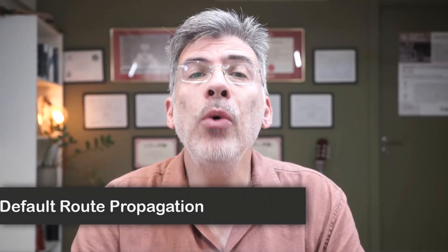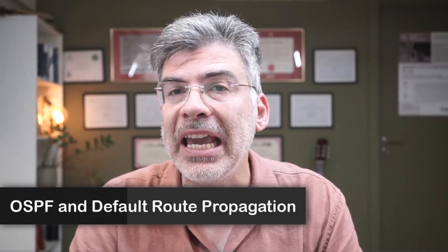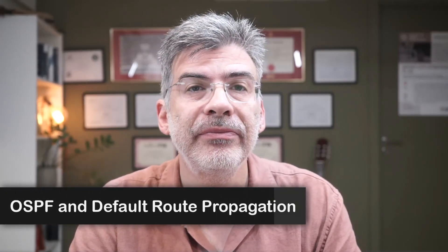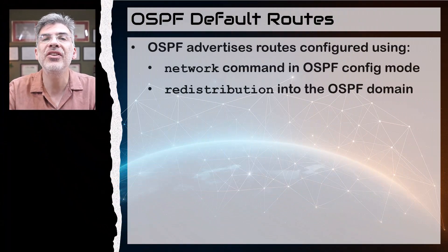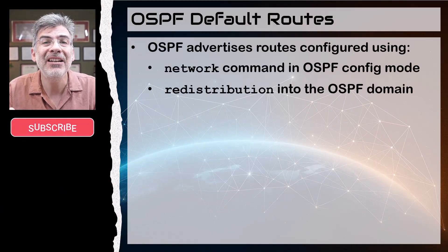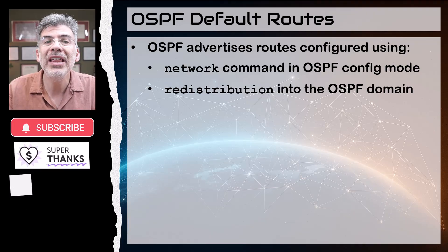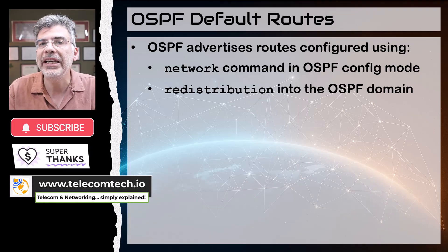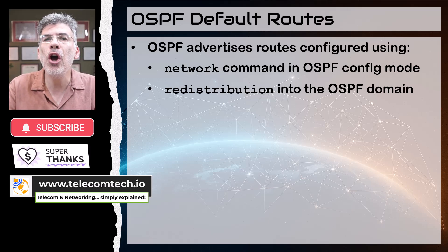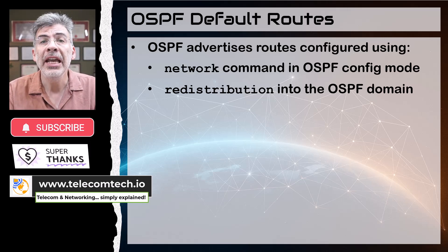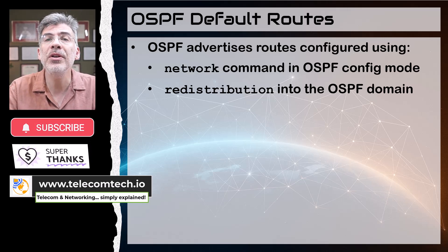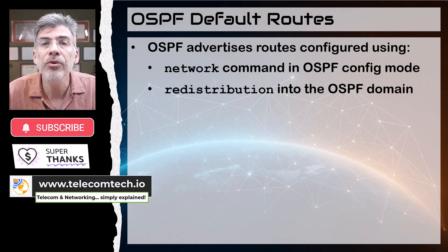Hello, this is Lazarus at Telecom Tech, where telecom and networking technologies are simply explained. Today we'll be simply explaining OSPF and how it propagates default routes. As a routing protocol, OSPF advertises those routes that have been configured using the network command or that have been redistributed locally into the OSPF domain. But what about default routes? How does OSPF handle those?